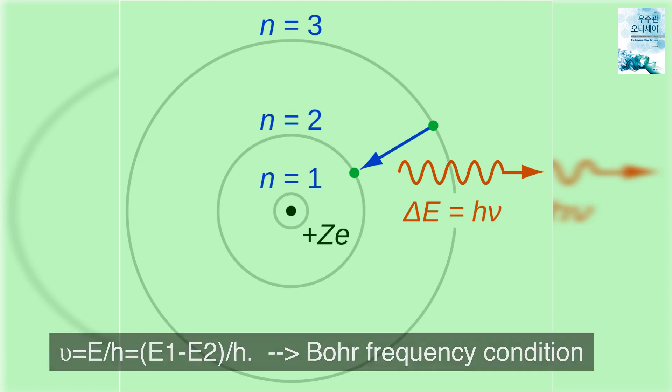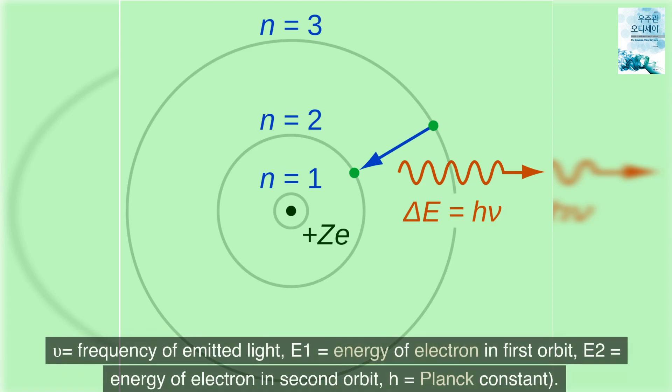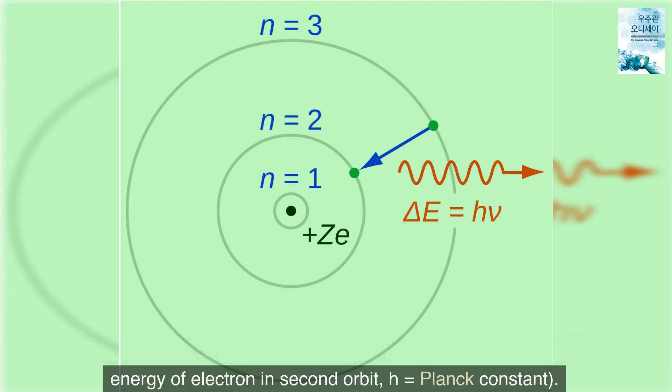Greater than Bohr frequency condition: ε equals frequency of emitted light, E1 equals energy of electron in first orbit, E2 equals energy of electron in second orbit, H equals Planck constant.